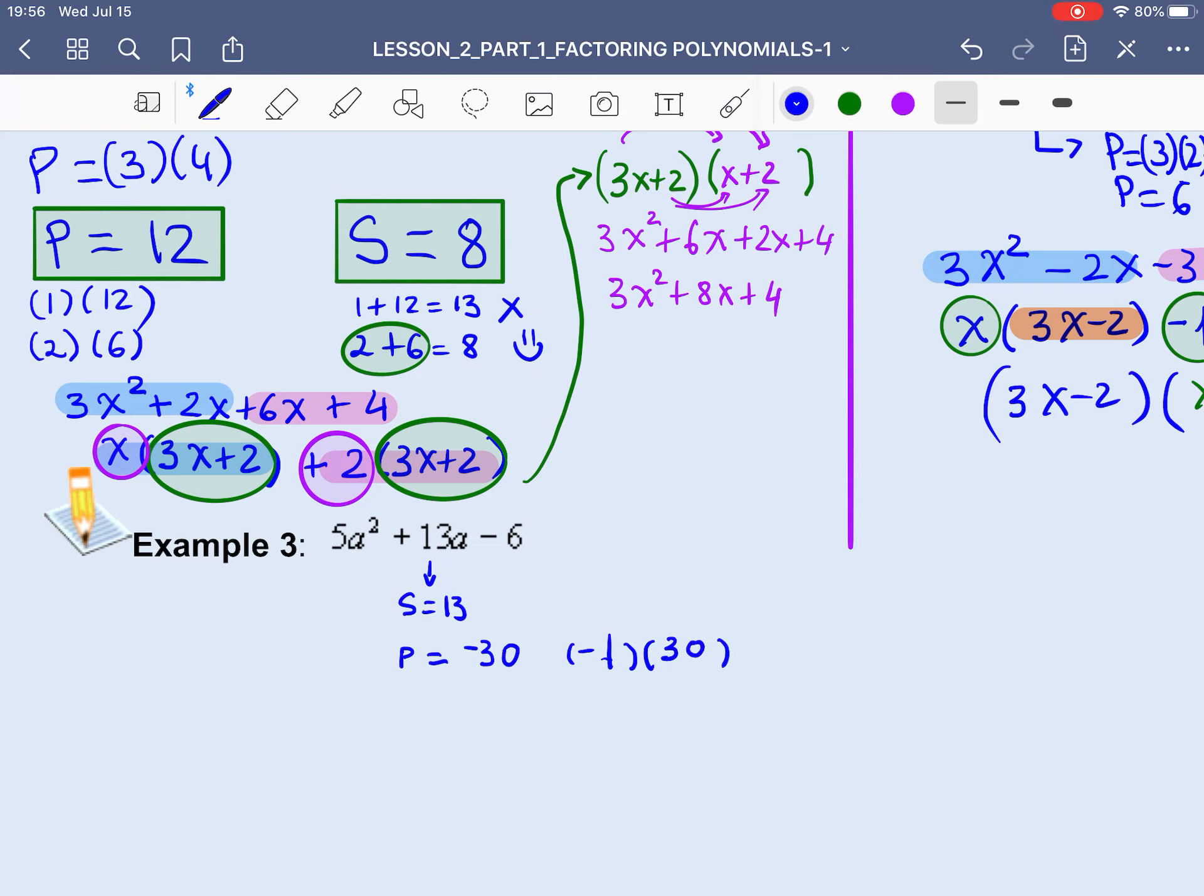So -1 times 30. The bigger number is positive. And I'm going to say, well, that doesn't add up to 13. It will have a sum of 29. So I go -2 times 15. Hey, -2 times 15, if I added it, it will give me 13 exactly. So I'm going to say, hey, these are the winning numbers. -2 and 15. So let's break down the middle term into -2 and 15. So we have 5a² + 15a - 2a - 6.